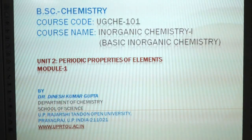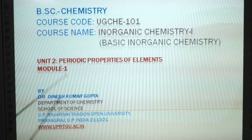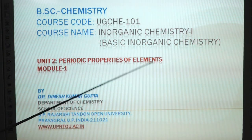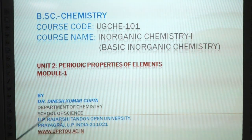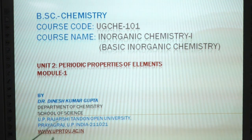In Unit 2, Periodic Properties of Elements. BSc Chemistry, Course Code UG CHE 101, Course Name Inorganic Chemistry 1, Basic Inorganic Chemistry, Unit 2 Periodic Properties of Elements. Module 1 by Dineshma Gupta, Department of Chemistry, School of Science, U.P. Rajshri Tundra Open University.